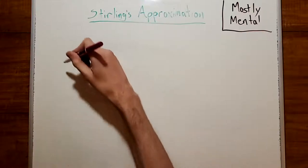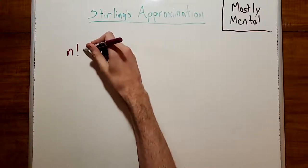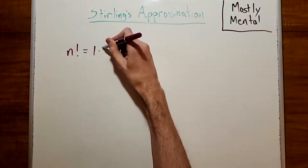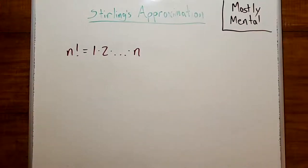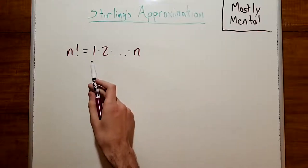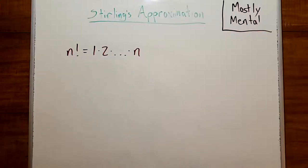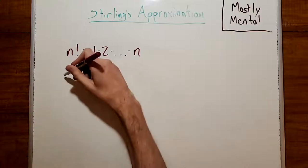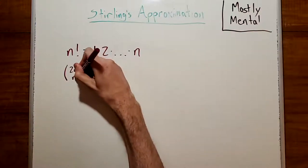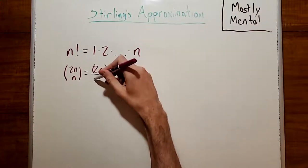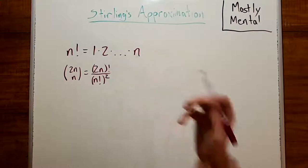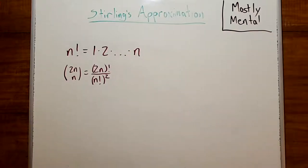Why do we need an approximation for n factorial at all? After all, we already have an exact formula. Just multiply together all the numbers from 1 through n. Well, for one, factorials are somewhat awkward to work with. There are no shortcuts for computing them. You really have to multiply all the numbers together. And there's very little cancellation. If we look at, say, 2n choose n, that's going to be 2n factorial over n factorial squared. And that doesn't simplify much at all.